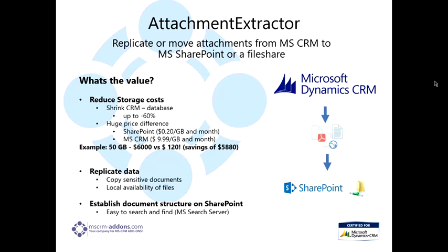It can shrink down your CRM database up to about 60%. And for our CRM Online customers, there is a huge price difference. These numbers are actually from September of last year: SharePoint was $0.20 a gig per month, and CRM was $9.99 a gig per month. So for example, if you had a 50-gigabyte database, you're looking at $6,000 versus $120. That's a huge savings.